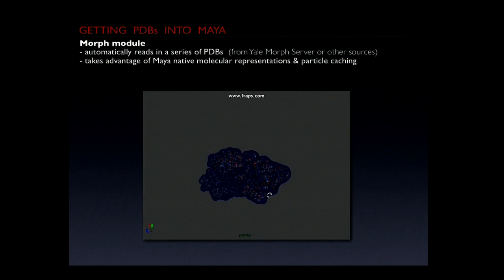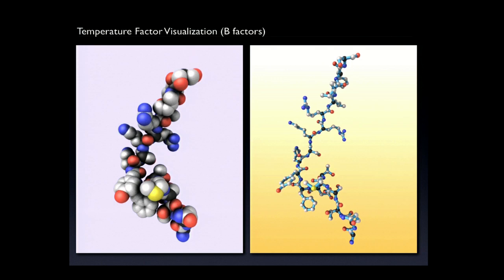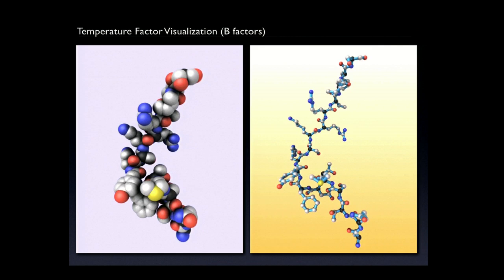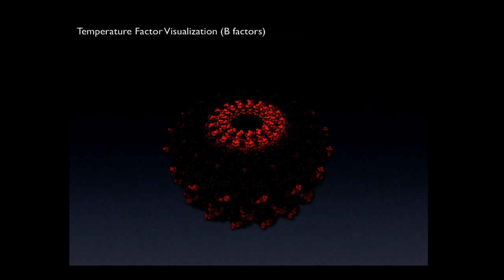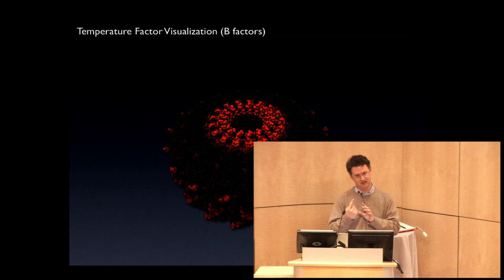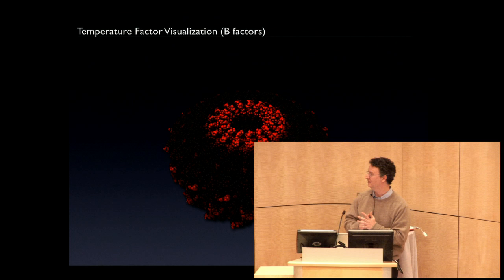B-factors: there are different ways of visualizing them. One way uses the B-factor as a scaling factor on a random motion — not exactly the most accurate, but at least a visual proxy. There are also static ways of doing it. This is the double-disk structure of TMV — tobacco mosaic virus — and the B-factors show that the lining of the cavity providing the interface between the protein and the RNA genome seems to have interestingly high temperature factors, implying flexibility, at least in a crystal environment.